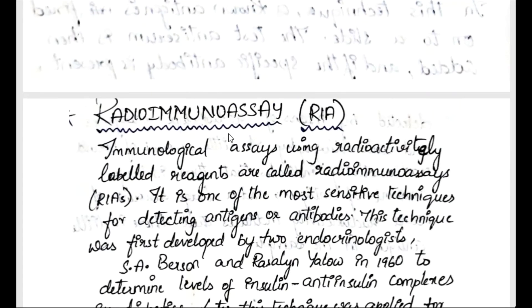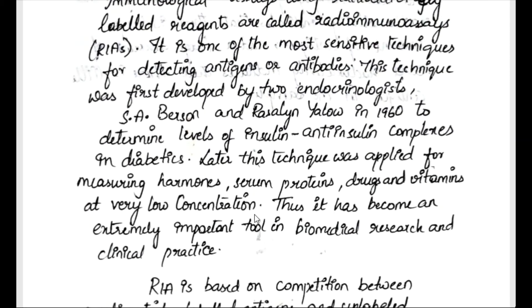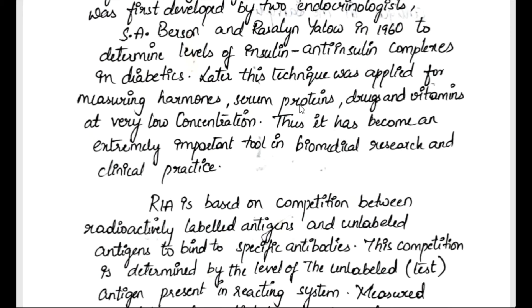Moving to the second type of labeled antibody assay — radioimmunoassay, simply called RIA. Immunological assays using radioactively labeled reagents are called radioimmunoassays. This is one of the most sensitive techniques for detecting antigens or antibodies, and was first developed by two endocrinologists, S.A. Berson and Rosalyn Yalow, in 1960 to determine the levels of insulin and anti-insulin complexes in diabetics. It was later applied for measuring hormones, serum proteins, drugs, and vitamins at very low concentrations.